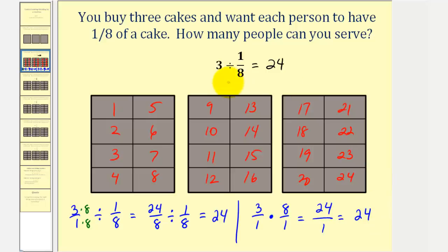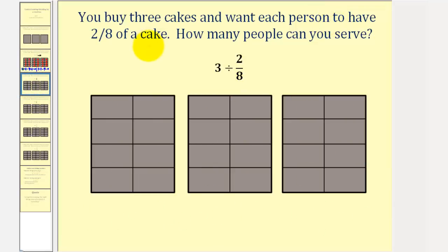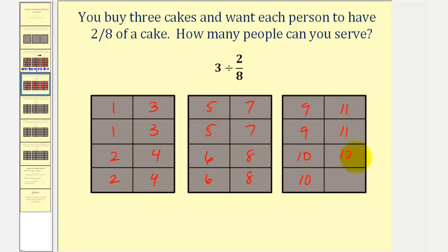Now let's change this slightly and say that each serving is going to be two-eighths of a cake. I know this simplifies to one-fourth, but let's leave it as two-eighths for a moment. So we have three divided by two-eighths, meaning we want to determine how many two-eighths are in three. Let's count them again. Since each two-eighths represents one serving, we have a total of twelve servings. Three divided by two-eighths equals twelve — there are twelve two-eighths in three.